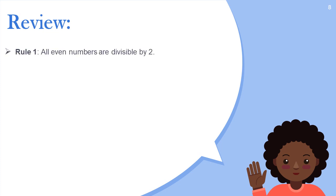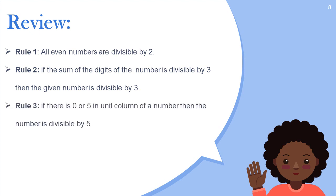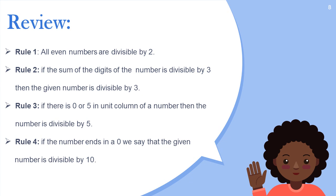Let us review. Rule number one: all even numbers are divisible by two. Rule number two: if the sum of the digits of the number is divisible by three, then the given number is divisible by three. Rule number three: if there is zero or five in the unit column of a number, then the number is divisible by five. Rule number four: if the number ends in a zero, we say that the given number is divisible by ten.